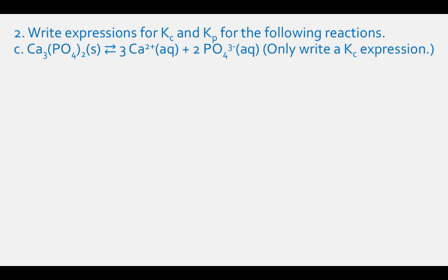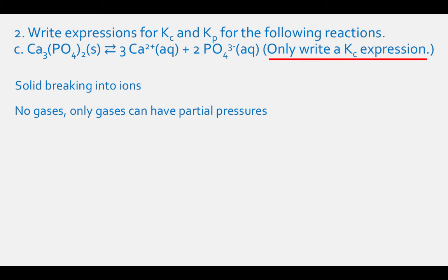For letter C, we have a solid breaking down into two aqueous ions, and it tells you to only write the Kc expression. This is because we have no gases in this reaction, and only gases can have partial pressures. The Kc expression is the concentration of Ca²⁺ cubed times the concentration of ClO₄⁻ squared.